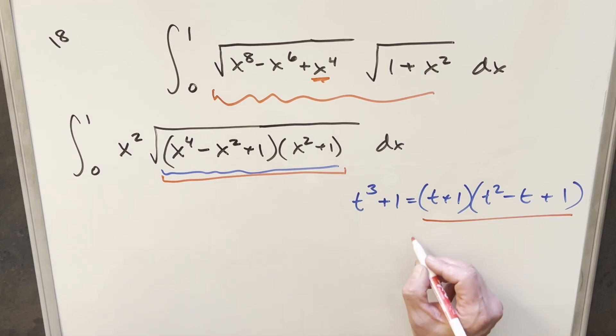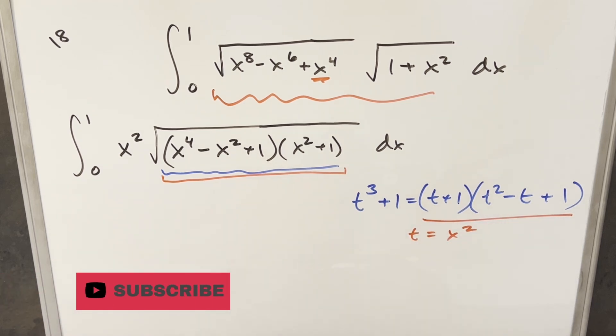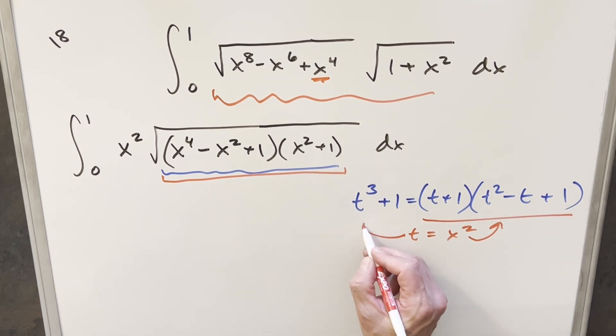So you kind of think of it like a substitution. If you just substitute into this t equal x squared, then if you do that here, this is exactly this. But if we do this on the left side as well, what's going to happen here is this is going to become x to the 6th plus 1.